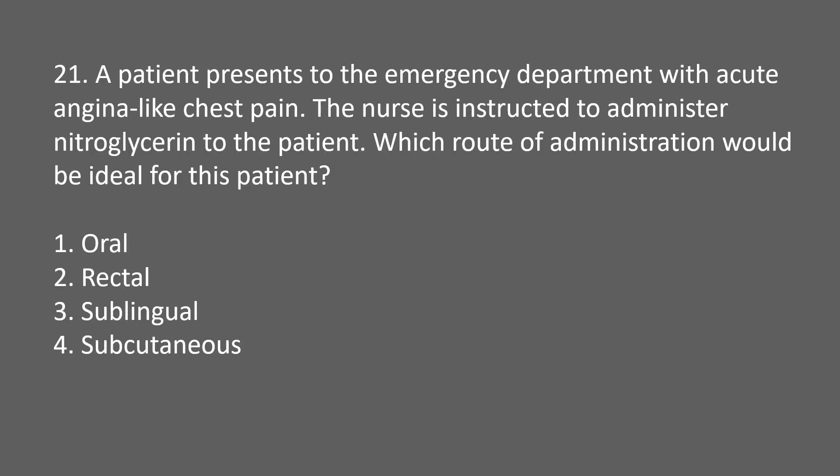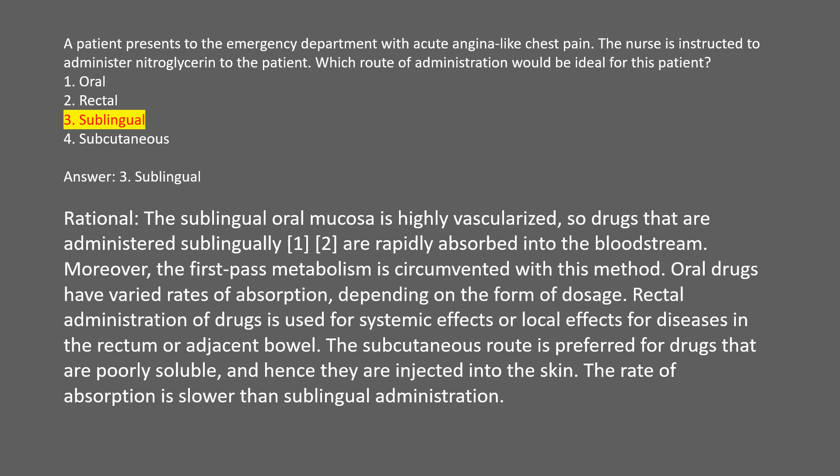A patient presents to the emergency department with acute angina-like chest pain. The nurse is instructed to administer nitroglycerin. Which route of administration would be ideal? 1. Oral. 2. Rectal. 3. Sublingual. 4. Subcutaneous. Answer: 3. Sublingual. Rational: the sublingual oral mucosa is highly vascularized, so drugs administered sublingually are rapidly absorbed into the bloodstream, and first-pass metabolism is circumvented. The subcutaneous route has a slower rate of absorption than sublingual administration.